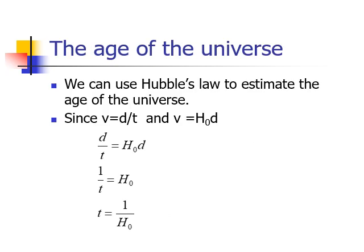We can use Hubble's law to estimate the age of the universe. Because we know that speed is distance over time, we can write Hubble's law of V equals H₀D as distance over time equals Hubble's constant times D. We can cancel out the distances because it's on both sides of the relationship, so we get one over the time equals Hubble's constant. So the time equals one divided by Hubble's constant. If we know what Hubble's constant is, then we can work out the approximate age of the universe.